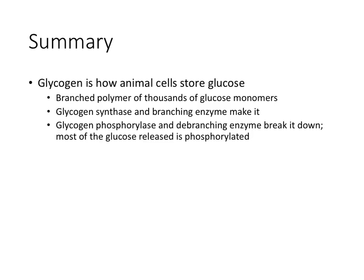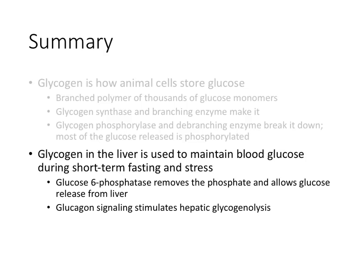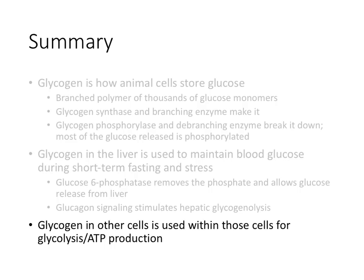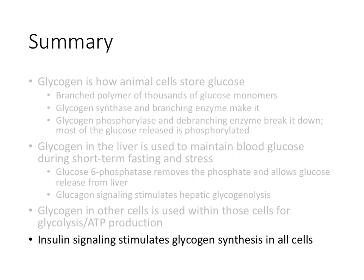Let's summarize. Glycogen is how animals store glucose — it's a highly branched structure containing thousands of glucose monomers. Glycogen synthase and branching enzyme make it; glycogen phosphorylase and debranching enzyme break it down, and most of the released glucose is phosphorylated. Liver glycogen maintains blood glucose levels for short-term fasting and stress, and glucose-6-phosphatase specifically expressed in hepatocytes removes the phosphate to allow glucose release from the liver. Glucagon signaling stimulates liver glycogenolysis. Glycogen in other cells is used for glycolysis and ATP production. Insulin signaling stimulates glycogen synthesis in all cells.